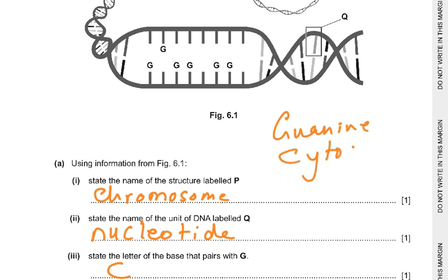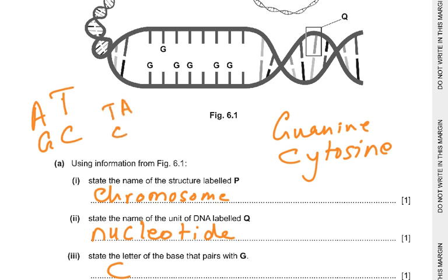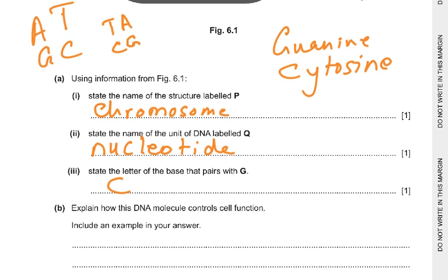In O levels you don't need to know the names guanine and cytosine, but the base pairing rule is A–T and G–C. Remember it as AT GC. So if you see T on one side, the other side will be A; if you see C on one side, it will be G.